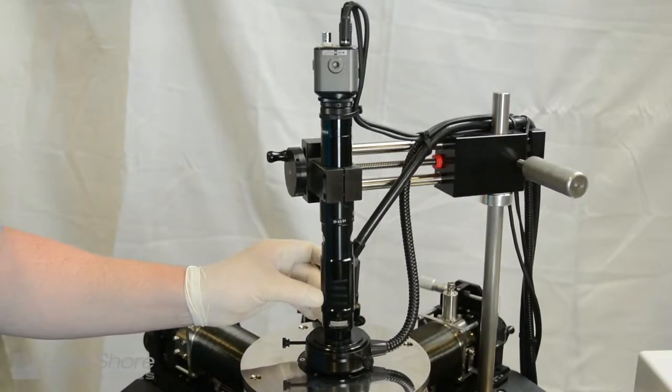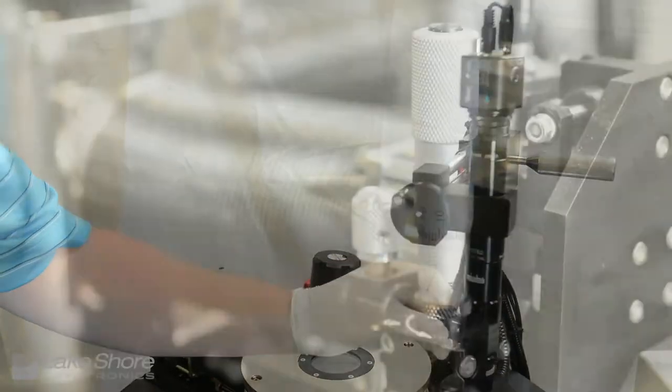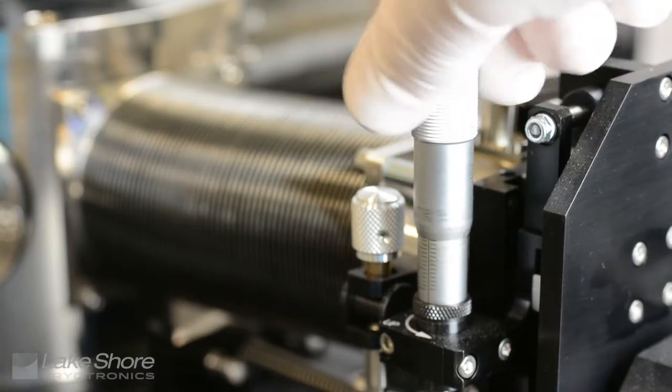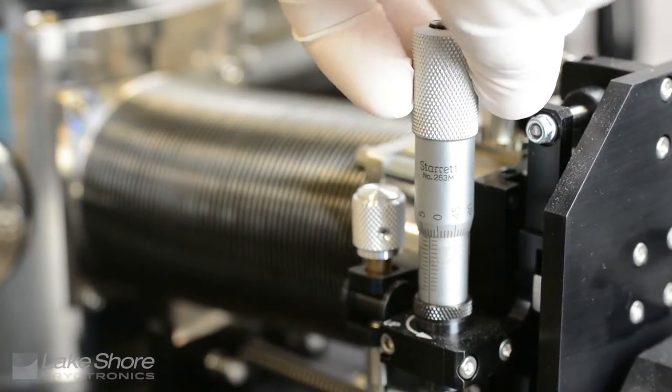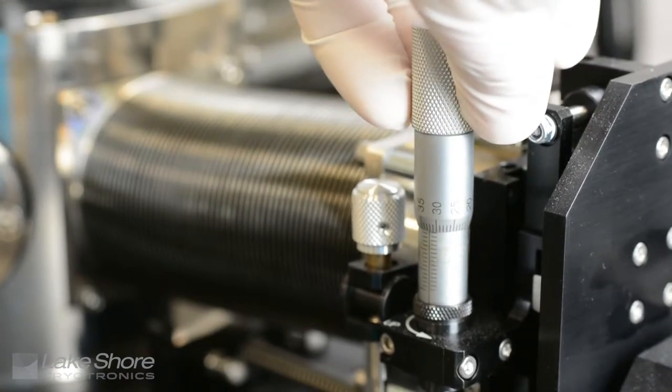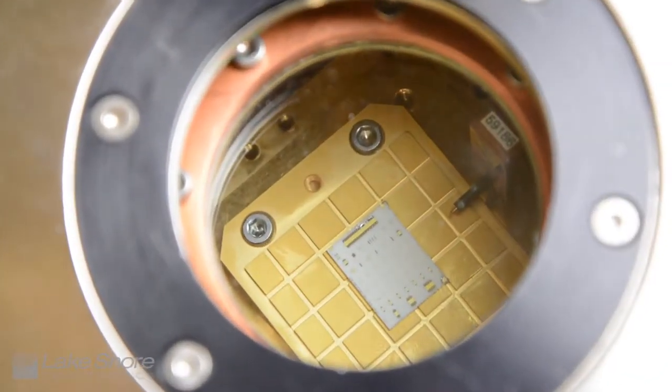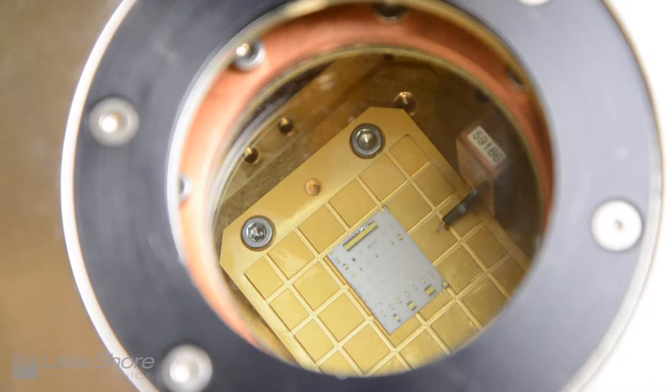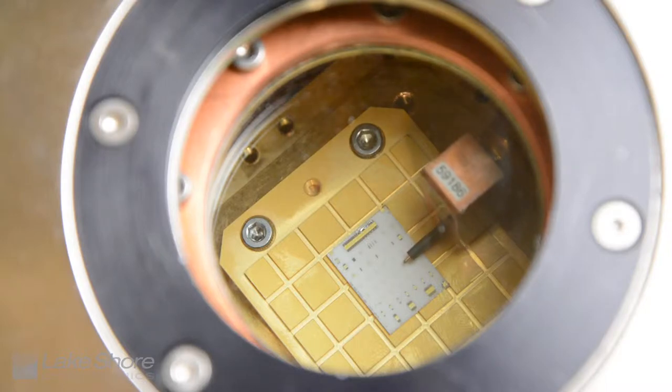In step 1, we will ensure the probe is visible through the viewport on the vacuum chamber and then use the z-axis micrometer to raise all probes above the sample stage enough to clear the sample landing pad. While visually observing through the vacuum chamber viewport, use the x-axis hand dial and y-axis micrometers to position the probe tip over the sample landing pad.